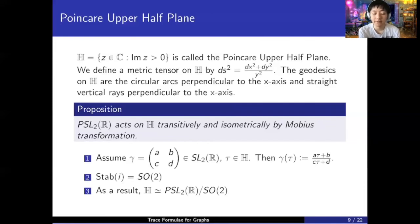And then the geodesics on H can be found to be all the circular arcs perpendicular to the x-axis and the straight vertical rays perpendicular to the x-axis. We have an important proposition which says that PSL 2 of R acts on H transitively and isometrically by Mobius transformation. So here isometrically means it preserves this metric. And the PSL 2 of R is just the SL 2 of R mod plus or minus I. And Mobius transformation is defined as such that if gamma is ABCD in SL 2 of R and tau is in H, then gamma of tau is defined to be A tau plus B divided by C tau plus D. The stabilizer of I can be found to be SO of 2, the special orthogonal group. And as a result, by orbit stabilizer theorem, H can be identified with PSL 2 of R mod SO of 2.